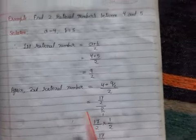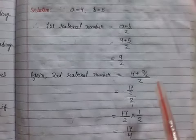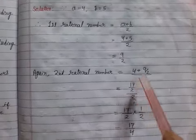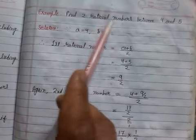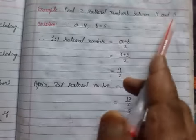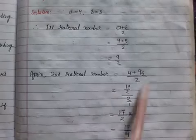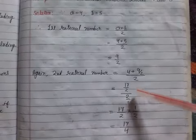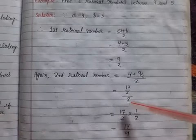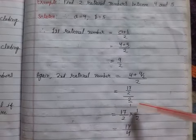Again, for the second rational number, we add 9 by 2 to the first number. Remember that we add the first rational number to 4, not 5, because we need numbers between 4 and 5. So the second rational number is 4 plus 9 by 2, divided by 2. 4 plus 9 by 2 equals 17 by 2, divided by 2.